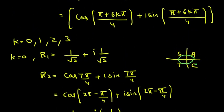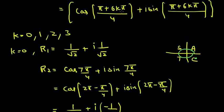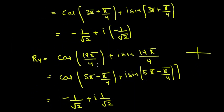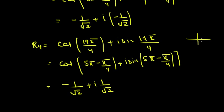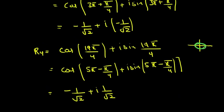When k = 3, we get (18π + π)/4 = 19π/4. We rewrite this as 5π − π/4. Since 5π − π/4 is in the second quadrant, sine is positive and cosine is negative. So R4 = −1/√2 + i(1/√2).